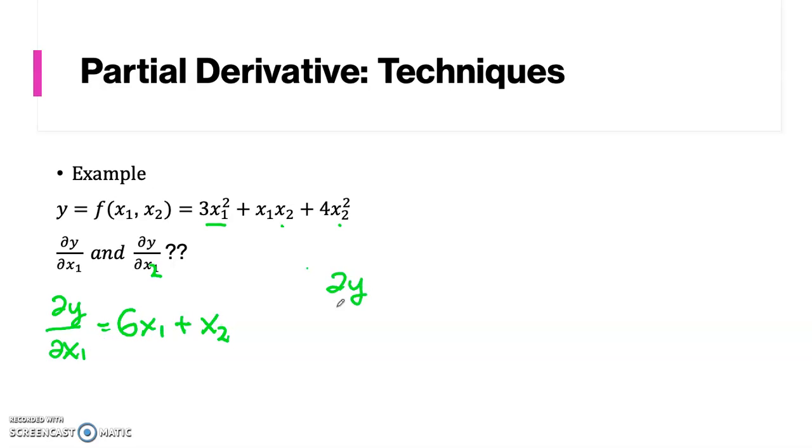What about dou y over dou x2? We assume that this is a constant, so the derivative is just 0, and x1x2, x1 is the constant, the variable is x2, so the result is x1 plus 8x2.